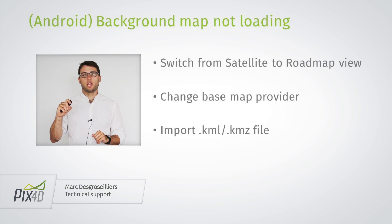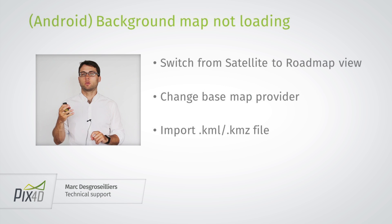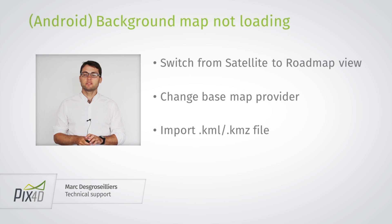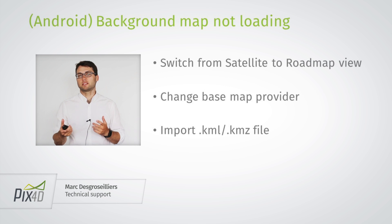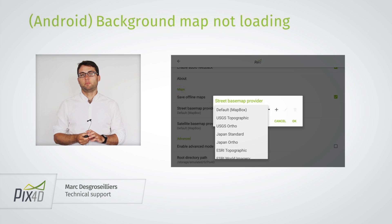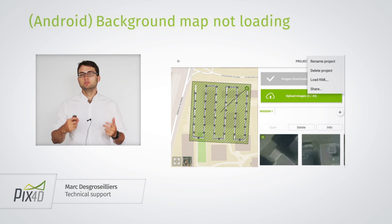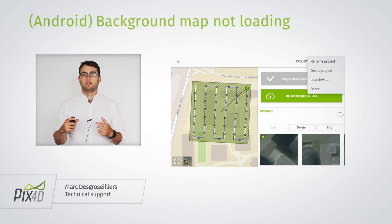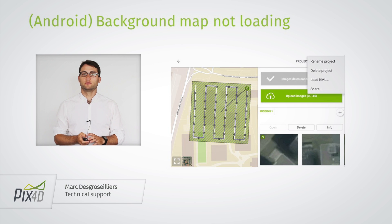One thing that could also happen is that your tiles in the background map could be missing or outdated. In the Android version, there's something you can do about this. First, you can change to road map view, because sometimes that's more updated. It's also possible to change the base map provider in the settings. Or, if you have your own background map as a KML or KMZ file, you can load it yourself, and this you can do in the project view in the Android version.